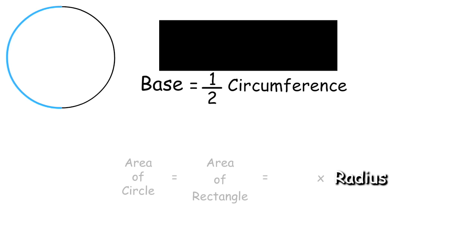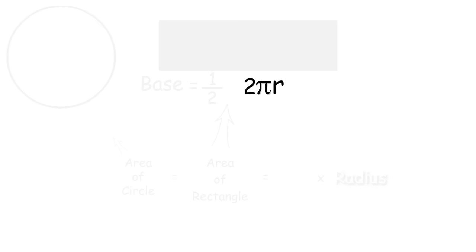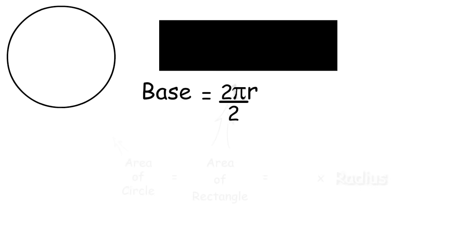Remember that the circumference is equal to 2πr. When we combine it with one-half, the two's cancel out, and base is equal to πr.